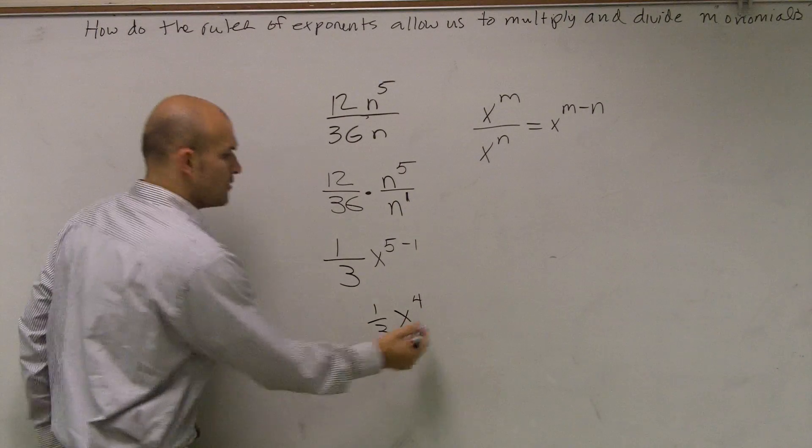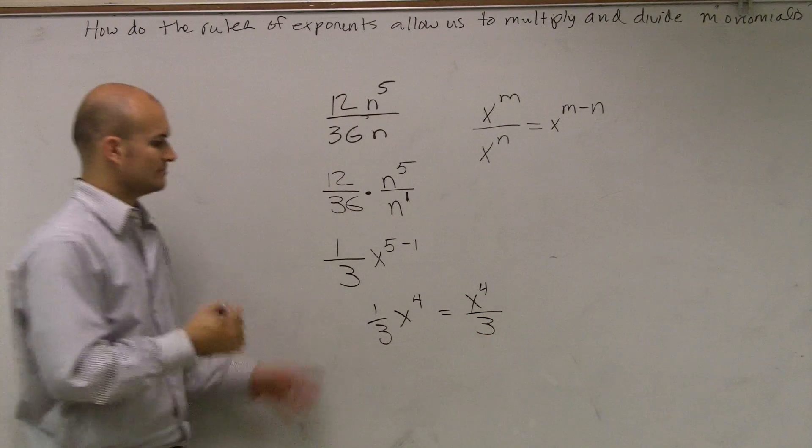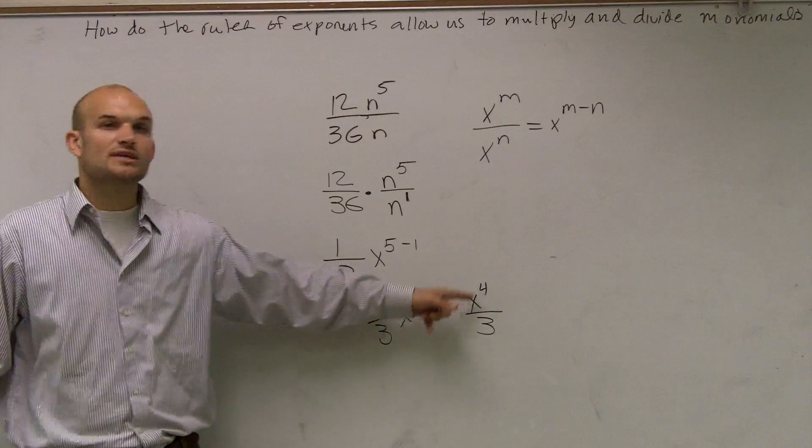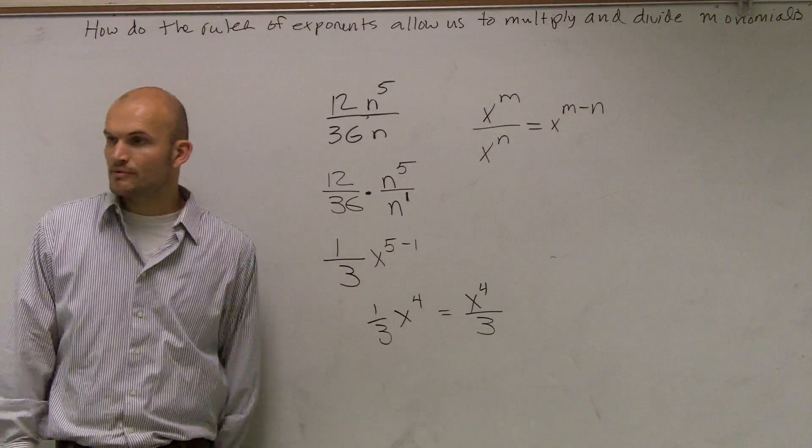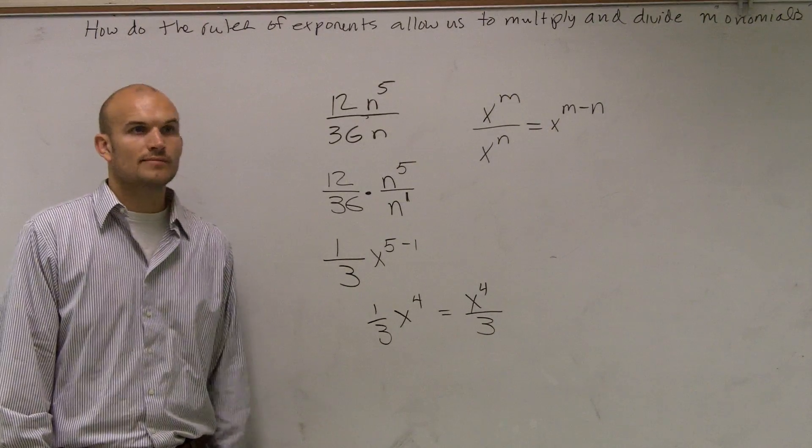Now, obviously, that's going to be positive. You could write that as n to the fourth over 3. You could write 1 third times that, or you could just write n to the fourth divided by 3 would be the same answer. Those are just two different ways you could represent it.